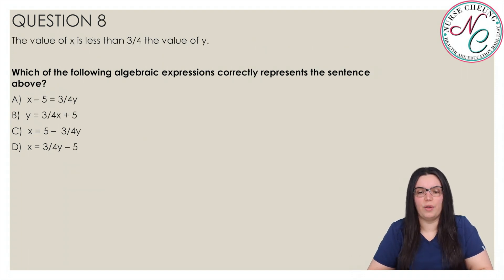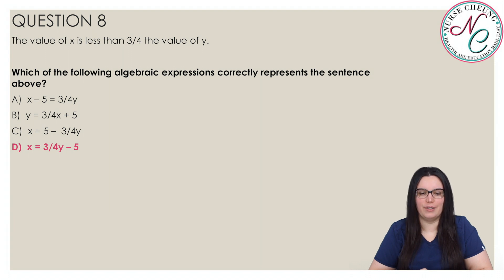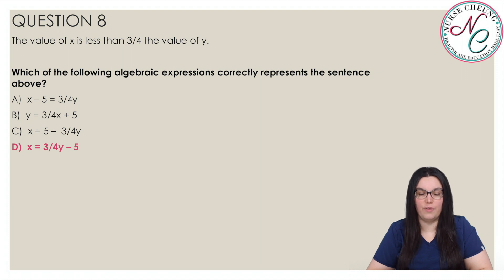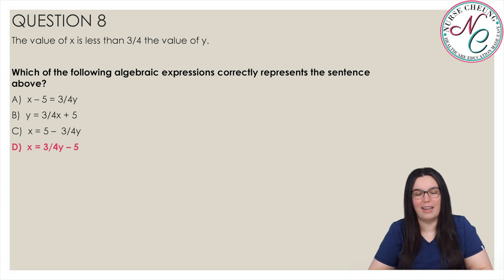The value of x is 5 less than 3 fourths the value of y. Which of the following algebraic expressions correctly represents the sentence? Is it A, x minus 5 equals 3 fourths y; B, y equals 3 fourths x plus 5; C, x equals 5 minus 3 divided by 4y; or D, x equals 3 fourths y minus 5? The correct answer is D, x equals 3 fourths y minus 5, since x is 5 less than 3 fourths y.